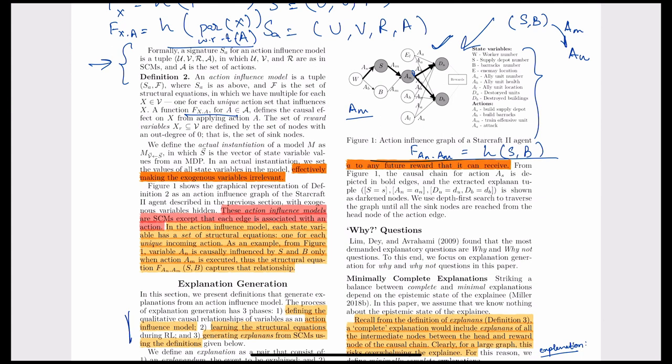Learning the F function during RL is the second part. The authors use a multivariate regression model during the training phase. If using an offline RL algorithm like DQN, they already have experience replay data, and they use this to train a regression function to obtain F(X, a). The third part is obtaining explanations using the Action Influence Model and the learned SCM equations.